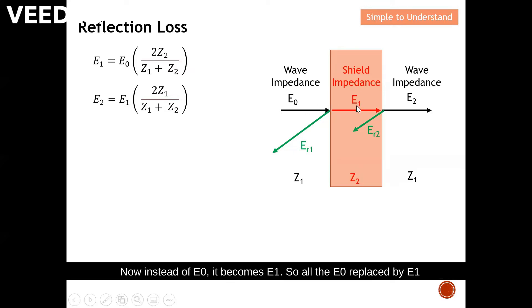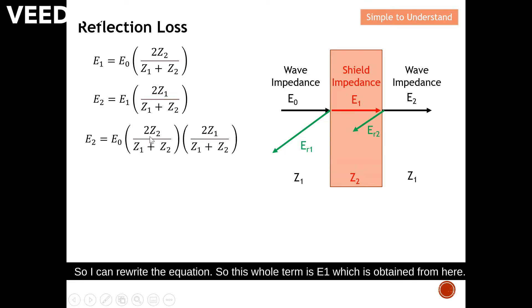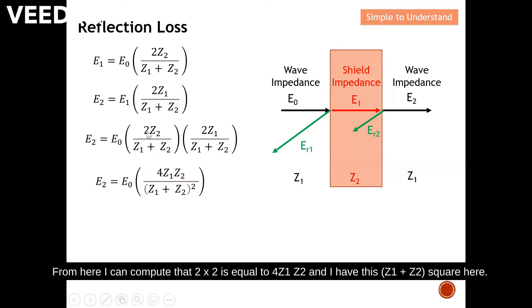Now, instead of E0, it becomes E1. All the E0 replaced by E1. And then remember, this Z1 penetrates through Z2. And now, it's Z2 going into Z1 space. This is how I get the E2 with respect to E1. From here, I see this E1 term. E1 is actually equal to this whole term here. So I can rewrite the equation. This whole term is E1, which is obtained from here. And then, this part here, I rewrite behind here. From here, I can compute that 2 times 2 is equal to 4. Z1, Z2, and I have this Z1 plus Z2 squared here.